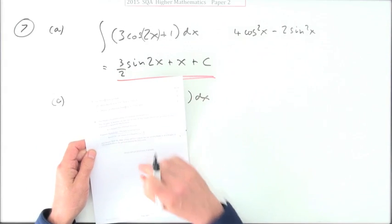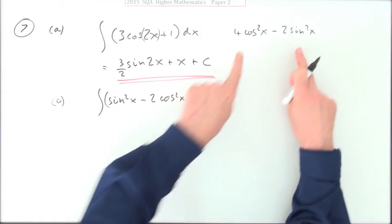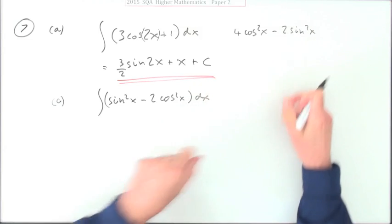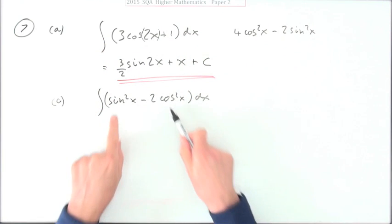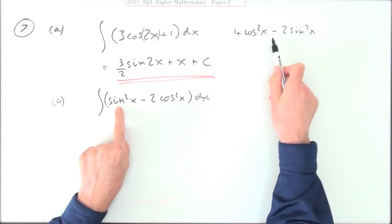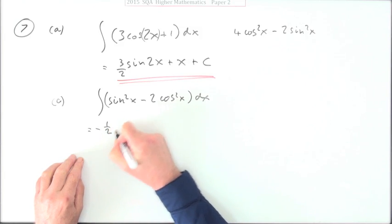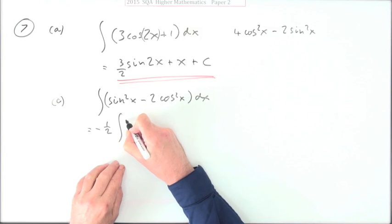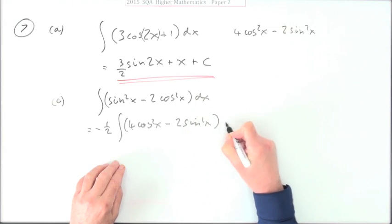And then finally part c: hence or otherwise find the integral of this. Now that's obviously related to what you just had. You just had that this thing was the same as that thing. And what's the connection between this and this? It's half of it made negative. So I could say that's equal to negative a half of the thing that I had before, the 4 cos squared x minus 2 sine squared x.